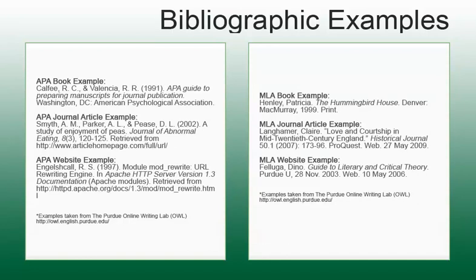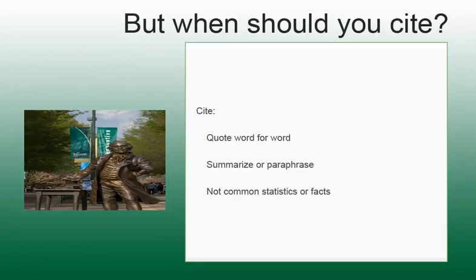Here are examples of bibliographic or reference citations. Notice the differences in the way the publication details are arranged and written, and the locations of where the items were found. But when should you cite? When you use the exact words of another person. When you summarize or paraphrase ideas, opinions, or conclusions from another person. Or when you use statistics and facts that some members of the intended audience of your paper might not know.